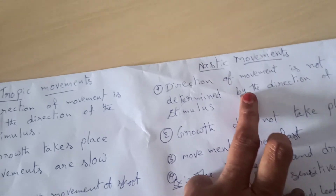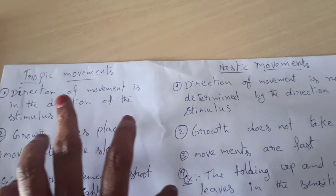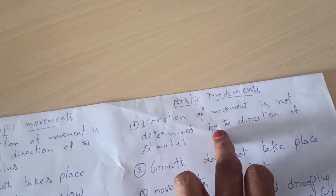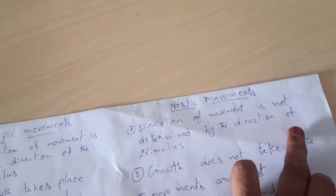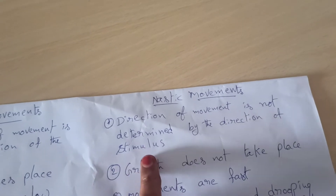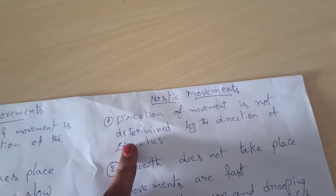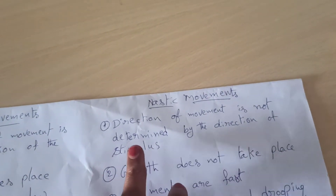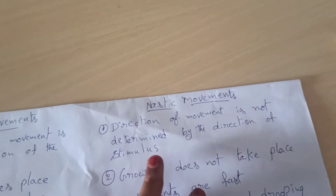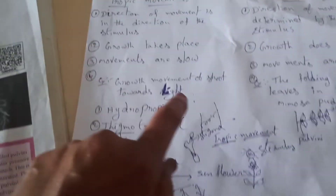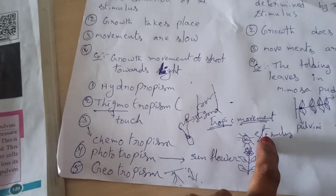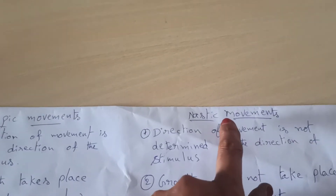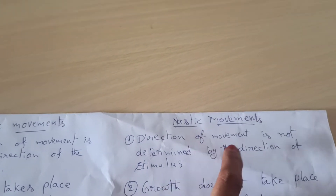What are called Nastic movements? The direction of movement is not determined by the direction of the stimulus. Stimulus controls it, but the movement direction is independent. In Tropic movements, movement is towards the stimulus — a positive movement. But in Nastic movements, direction is not governed by stimulus direction.